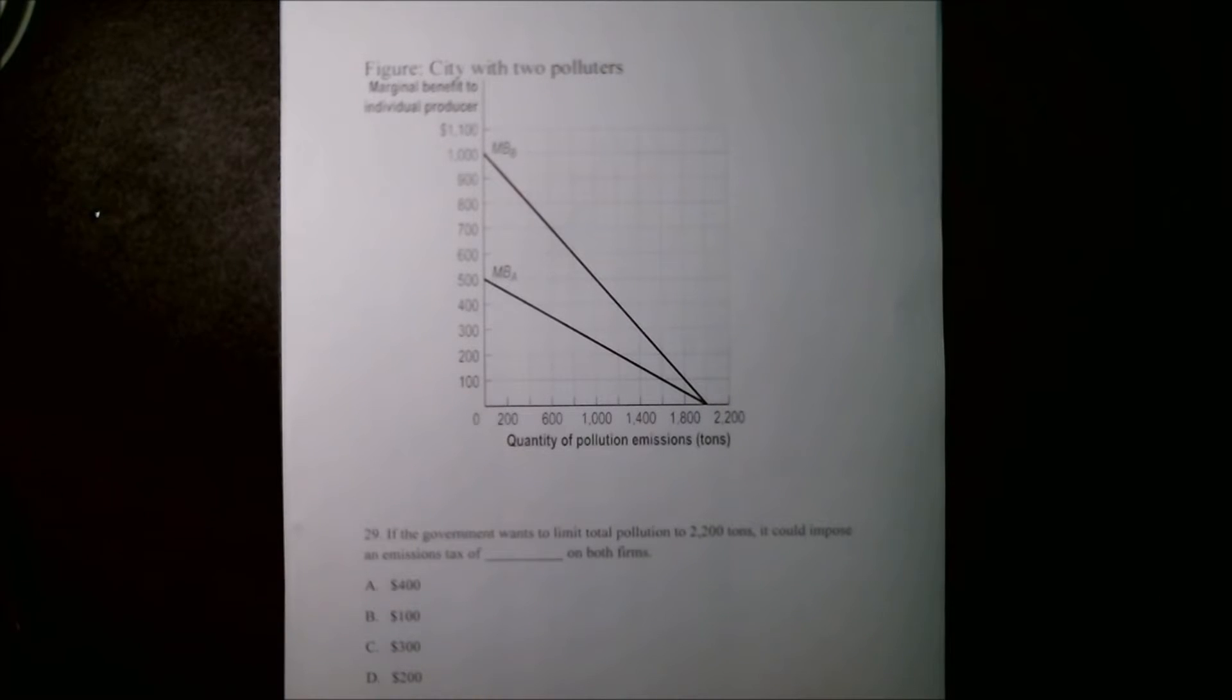Today we're going to be going over an externalities problem. This problem gives us a graph with the marginal benefit to two separate producers and the quantity of pollution they produce based on that marginal benefit.